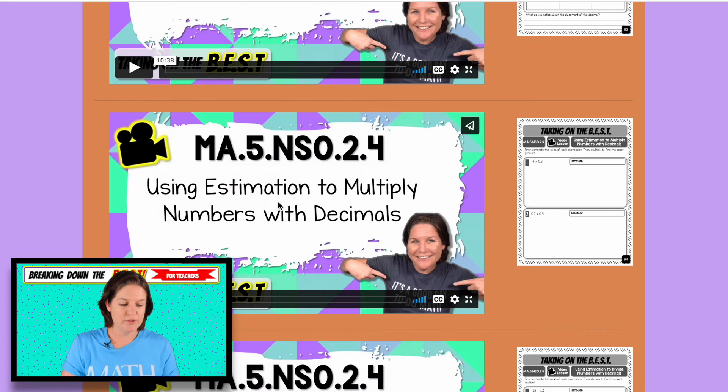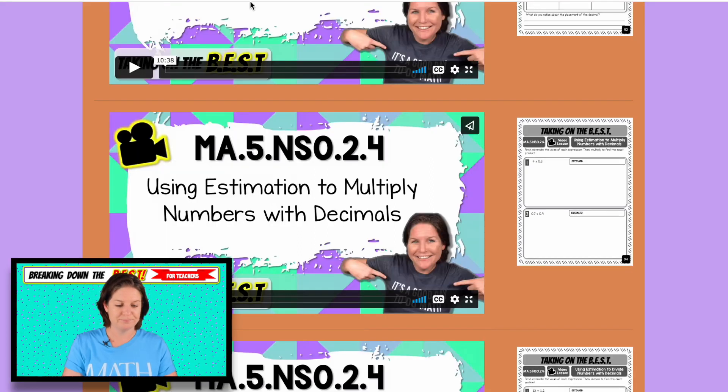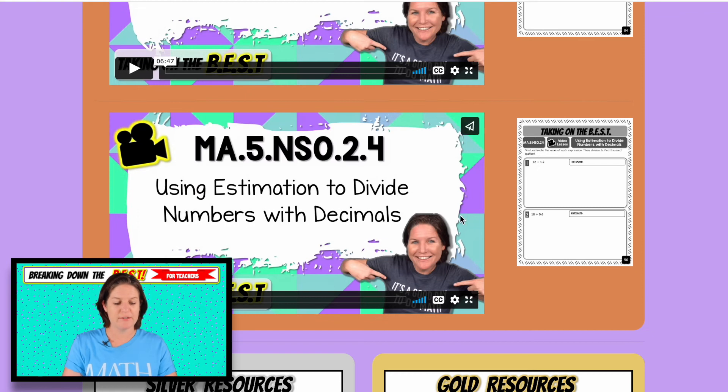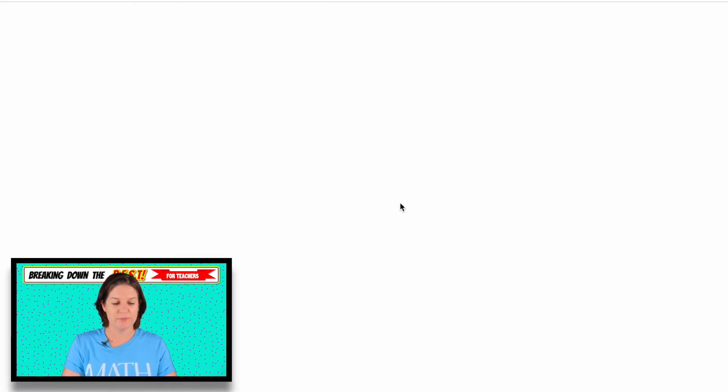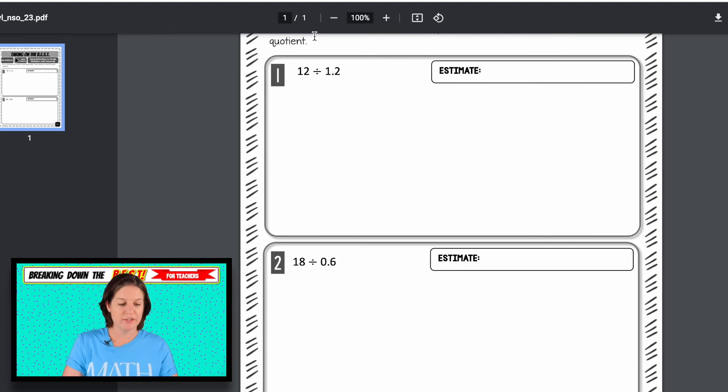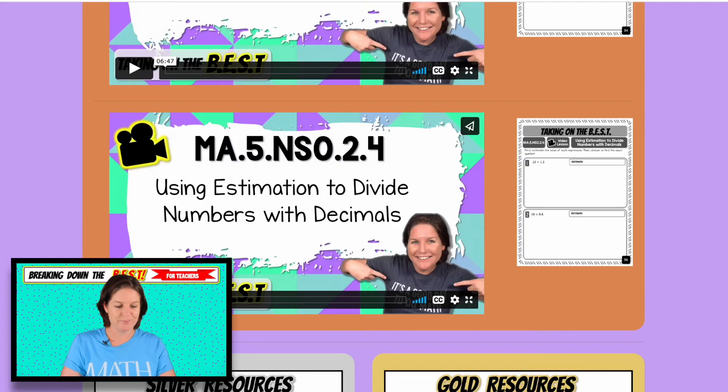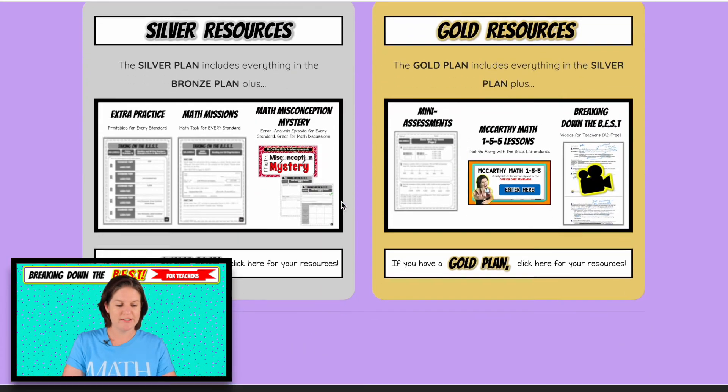Here, using estimation to multiply numbers with decimals. First we'll estimate and then we'll find the exact value there. And then using estimation to divide numbers with decimals. If you're not sure what's going on here, you can take a look at that video lesson and we'll break it down first with estimation and then finding the value of the expression. There's that word that you need to know. Those are your video lessons.